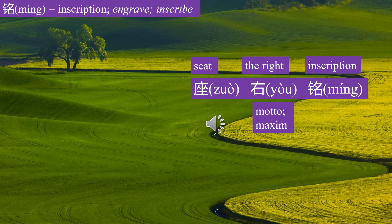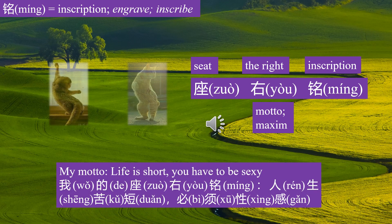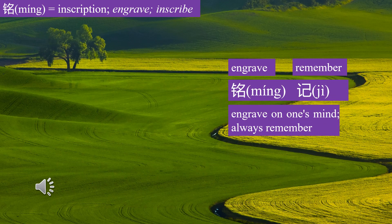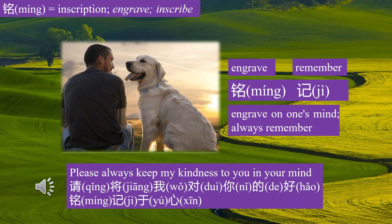Zuo you ming means motto. My motto: life is short, you have to be sexy — 我的座右铭：人生苦短，必须性感。 Ming ji means engrave on one's mind. Please always keep my kindness to you in your mind — 请将我对你的好铭记于心。